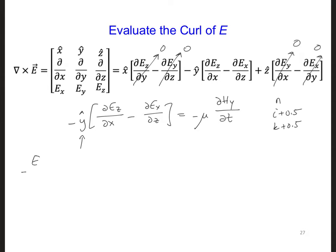we get Ez at n, i plus 1, k plus 0.5 minus Ez at n, i, k plus 0.5. This is a partial derivative in the x direction.